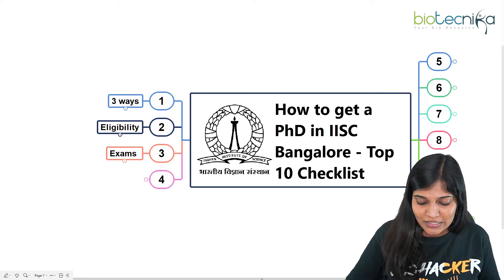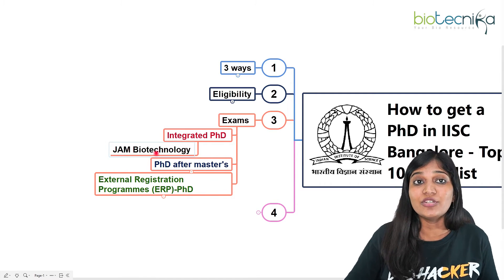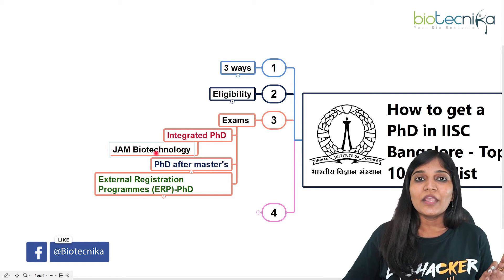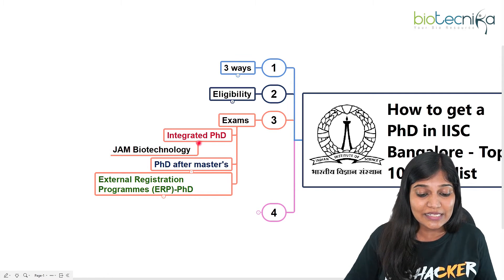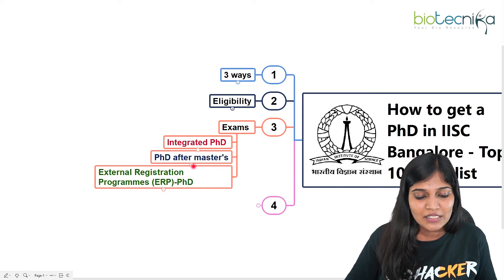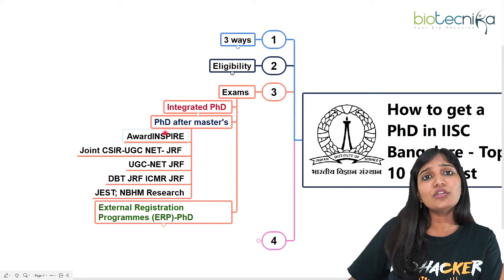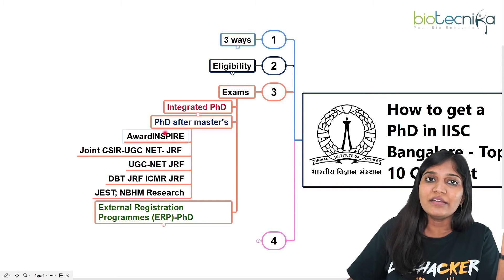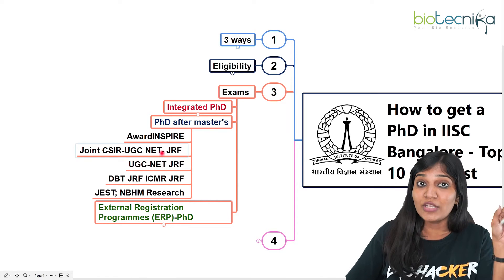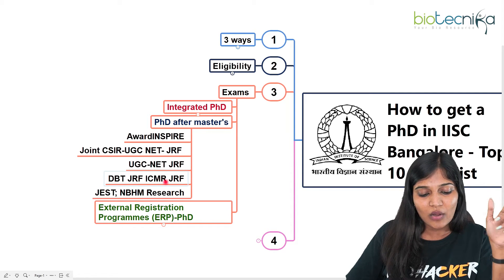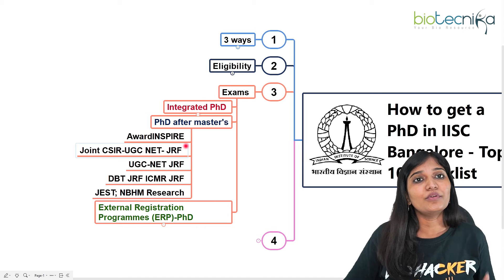Now for examinations: if you want to join the Integrated MS-PhD program after your bachelor's, you need a valid IIT JAM score in Biotechnology. GATE candidates can also apply, but JAM Biotechnology is very specifically important. For PhD after master's, you need a DST INSPIRE provisional offer — valid for one year — or CSIR NET JRF, UGC NET JRF, DBT JRF, ICMR JRF, JEST, or NBHM Research fellowship to start applying.